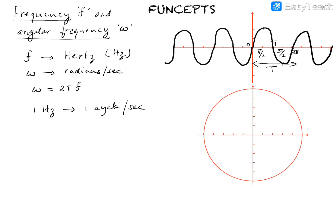Similarly, if this waveform completes two cycles in one second, it will have a frequency of two Hertz. So two Hertz corresponds to two cycles per second. Now, when the frequency is one Hertz, what happens to Omega?